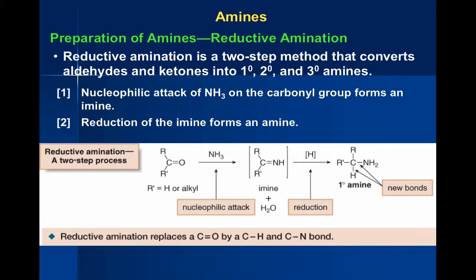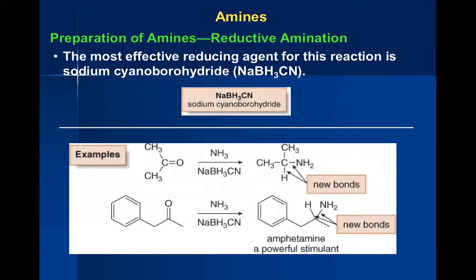Here we have a ketone and ammonia - typically ammonium hydroxide, which is really just aqueous ammonia. The sodium cyanoborohydride reduces the carbon-nitrogen double bond and you get the primary amine. This process is called reductive amination - we're making an amine through a reductive process.